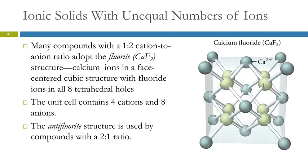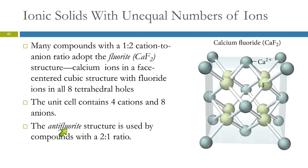Things get more complicated when you have unequal numbers of ions — if the charges on the ions are different. With calcium fluoride, you have two fluoride ions for every calcium ion. Many compounds with a one-to-two cation-to-anion ratio adopt this structure, called the fluorite structure. The calcium ions (cations) are in a face-centered cubic, and the fluoride ions are in all eight of the tetrahedral holes. In the zinc blende structure, the anions occupy only four because it's a one-to-one ratio; here it's one-to-two, so we have four cations and eight anions. The antifluorite structure is the reverse ratio — two cations and one anion.